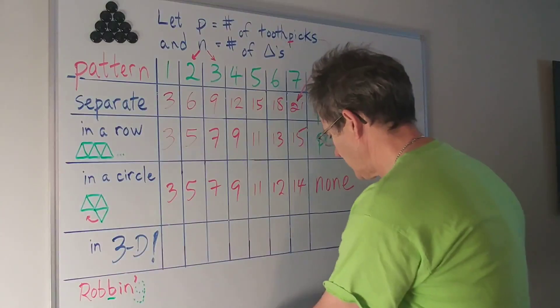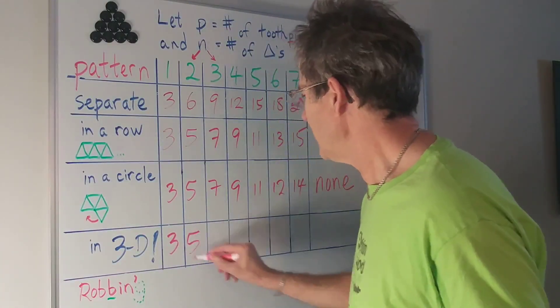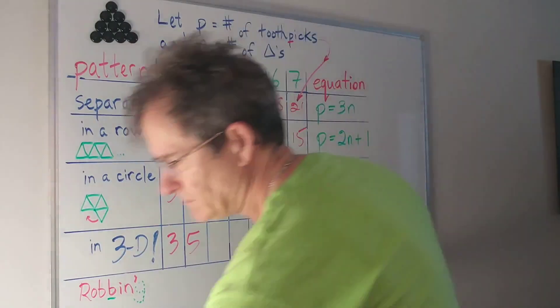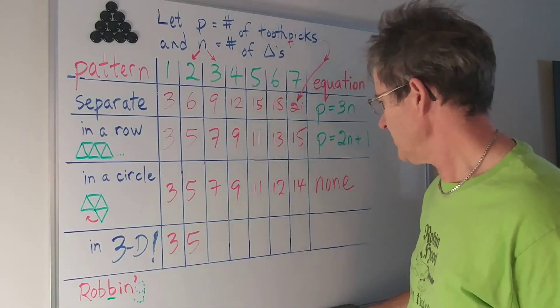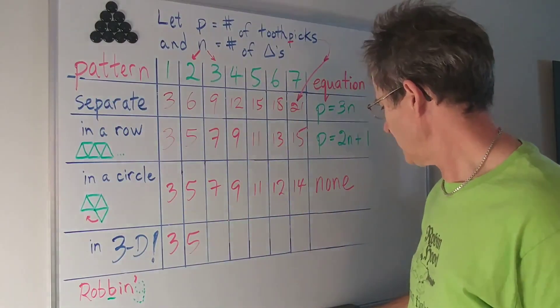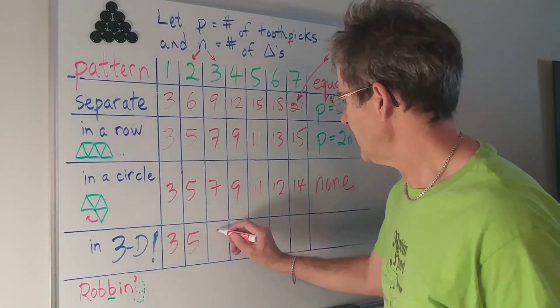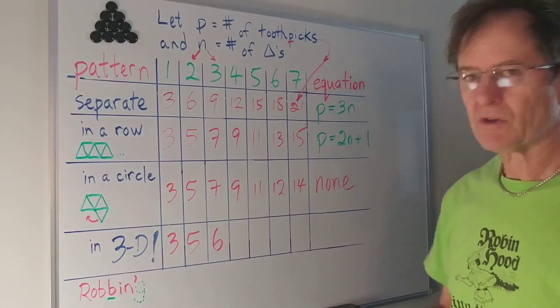The first one would be three. The second one would still be five. But then after that if I add those two toothpicks I was talking about and then the third one I could make two more triangles. So it only takes six toothpicks to make two more triangles.